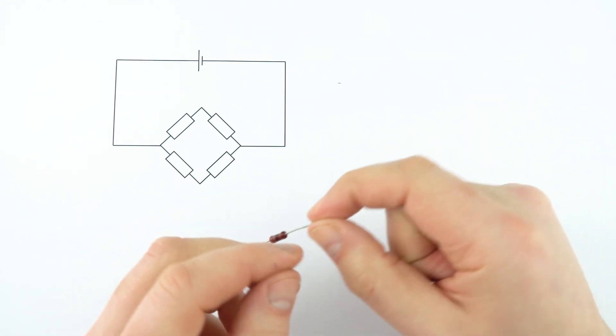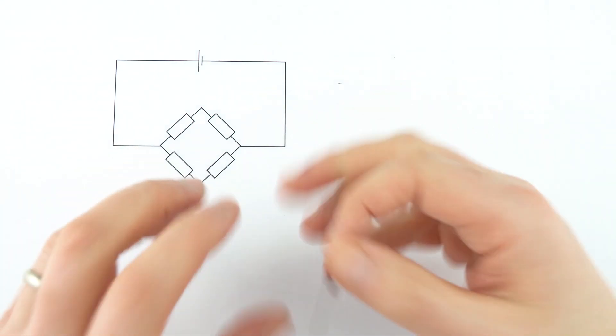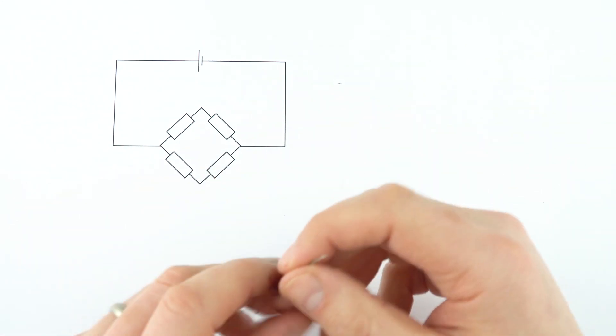One way we can do that is using a circuit like this. This is actually called a Wheatstone Bridge, invented actually not by Sir Charles Wheatstone, but by Samuel Christie. However, a few years later, Sir Charles Wheatstone improved it, made it popular, and therefore it's named after him.